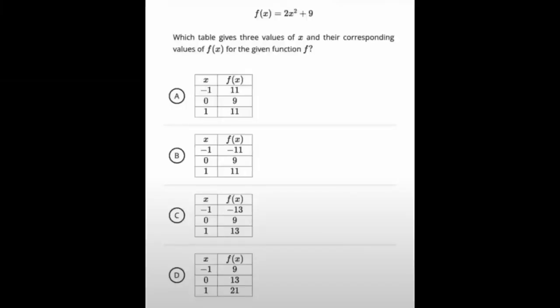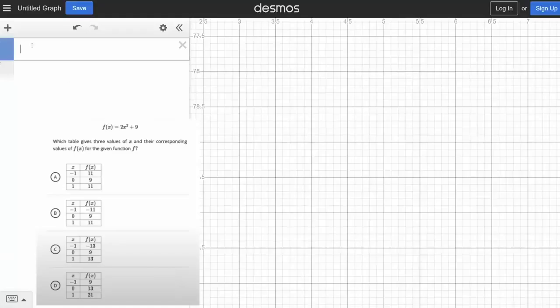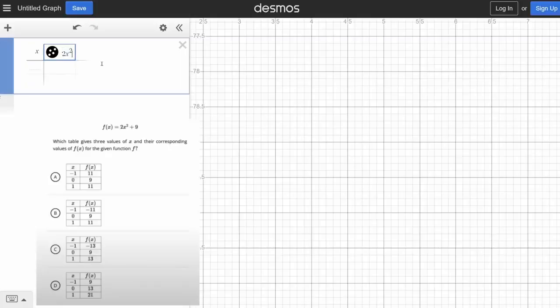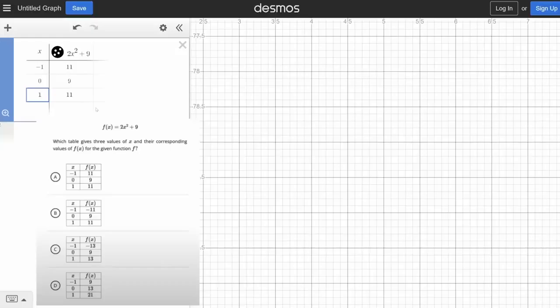Same thing with this problem where you're turning a function into a table. You shouldn't need Desmos, but it doesn't hurt. You can go to this plus sign and add a table, and then for your table, set your first column to x and your second column to 2x squared plus 9. So then we can input our values negative 1, 0, and 1 because that's what our answer choices have, and it'll automatically populate the other side of the table. So we can select answer choice A.